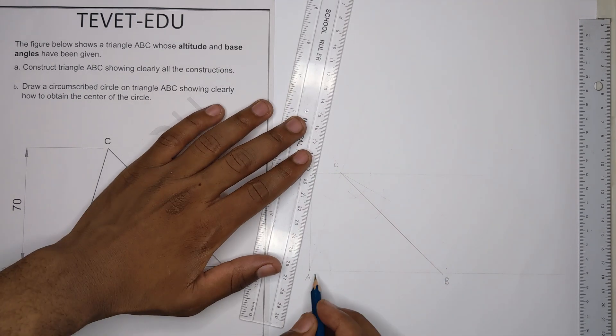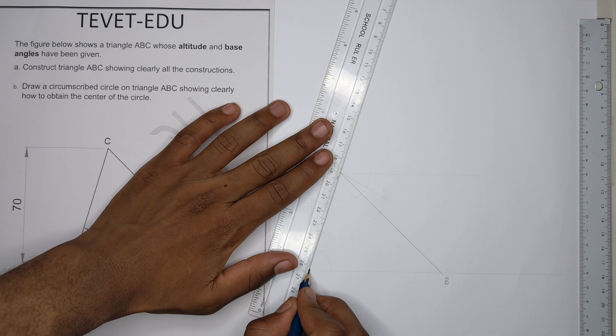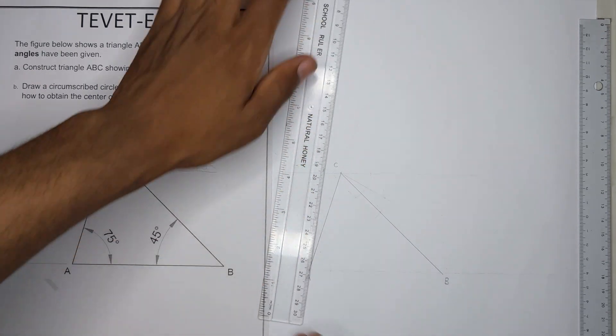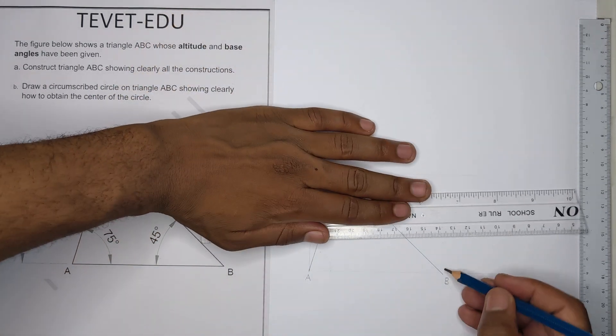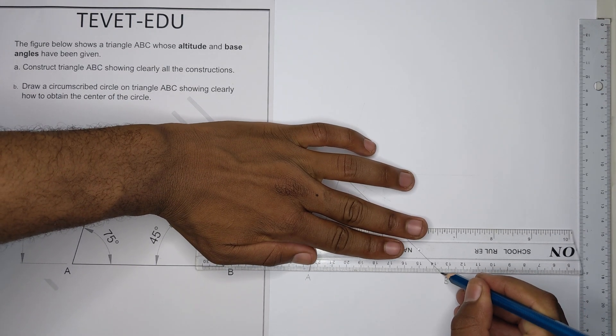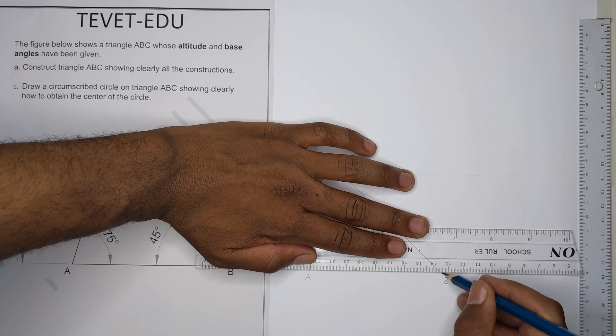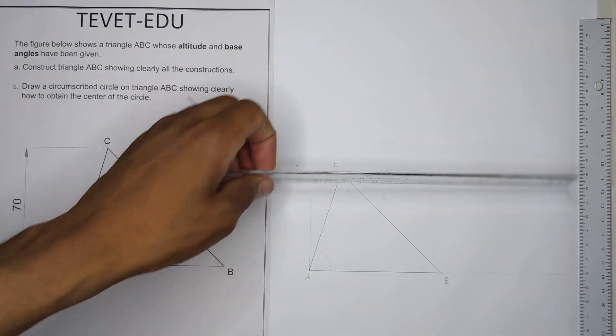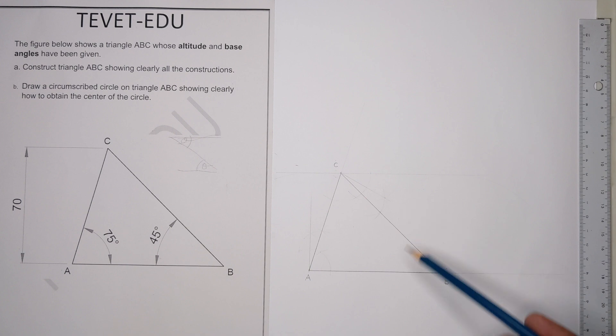Okay, so the only thing that is remaining is for us to outline the triangle ABC. So this is our triangle from question A there.